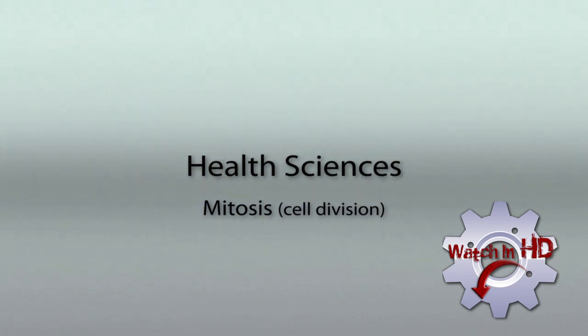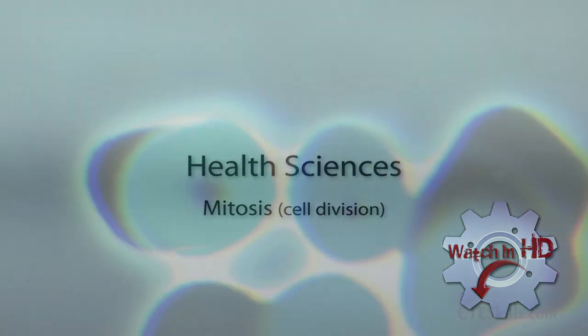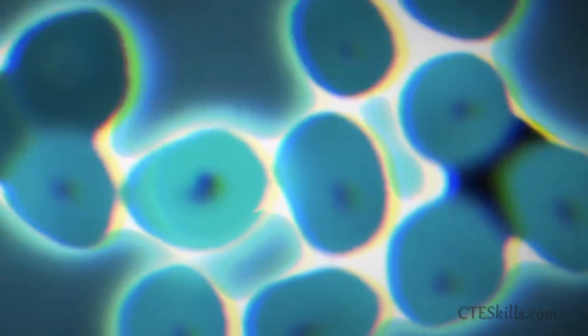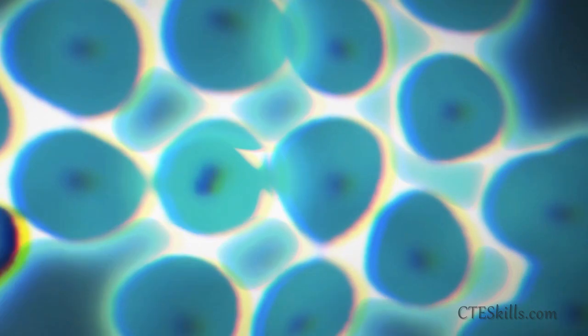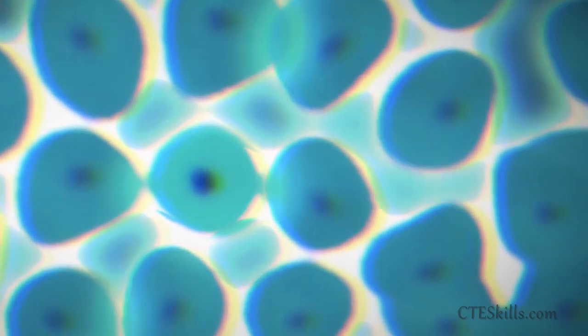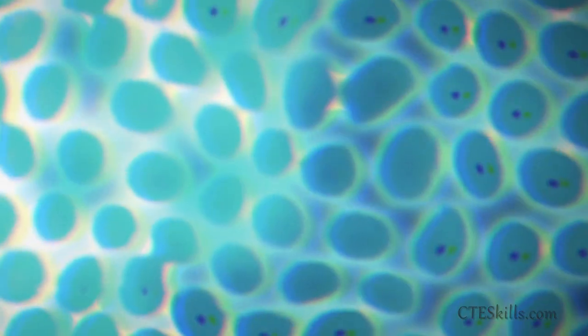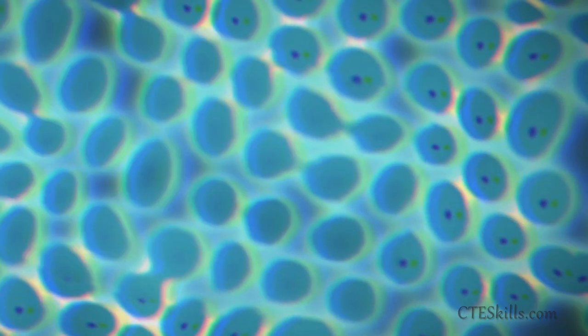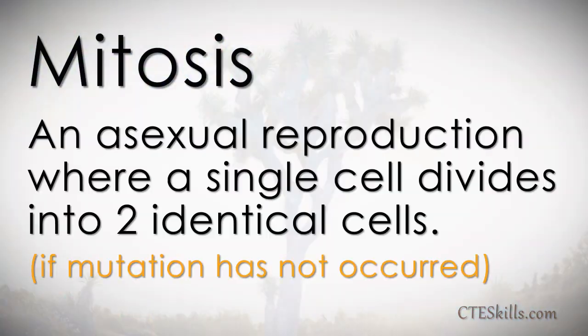How does a cell make another cell? It does it by a process called mitosis. Mitosis is an asexual reproduction where a single cell divides into two identical cells.